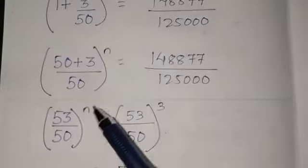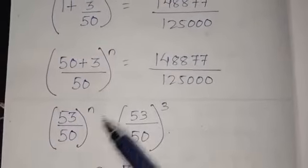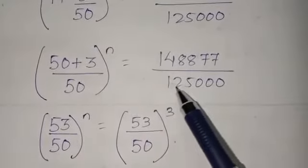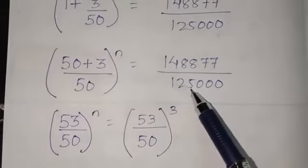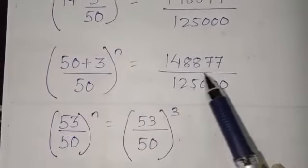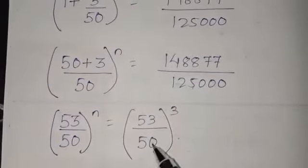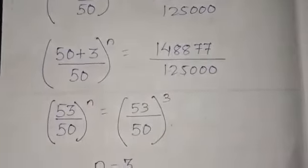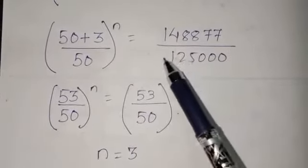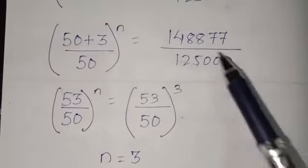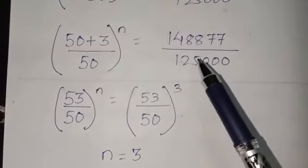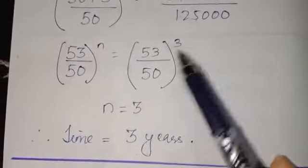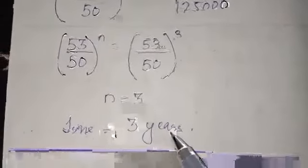We need to express the right-hand side as 53 by 50 to the power something. Observe the denominator: 125 is the cube of 5, and with 3 zeros that means the denominator is 50 cubed. If the denominator is 50 cubed, the numerator must be 53 cubed. Since the bases are the same, the powers must be equal, so the time is equal to 3 years.